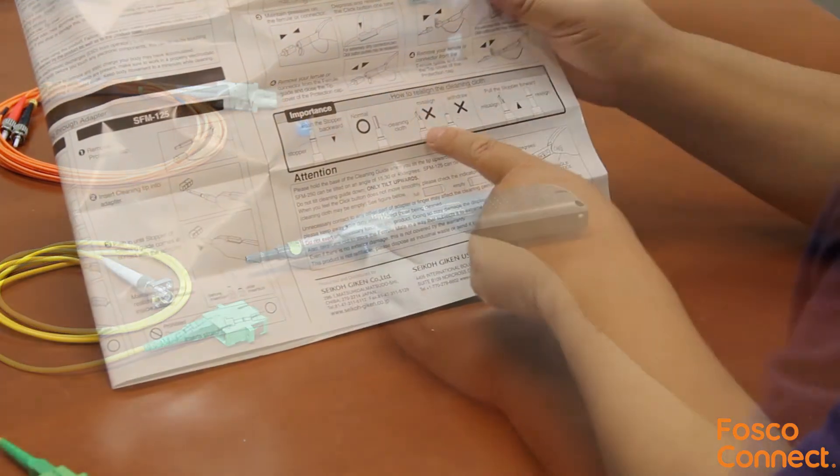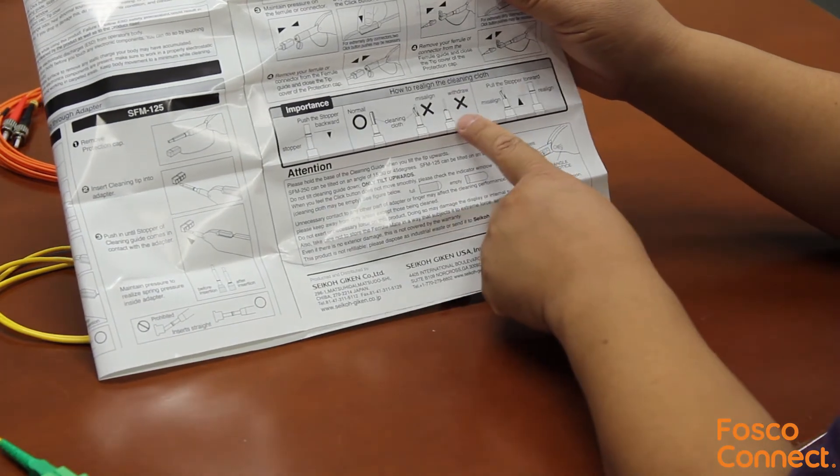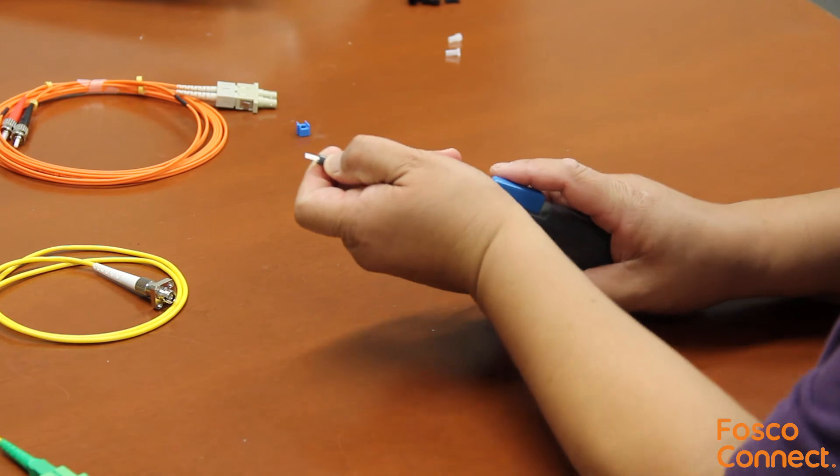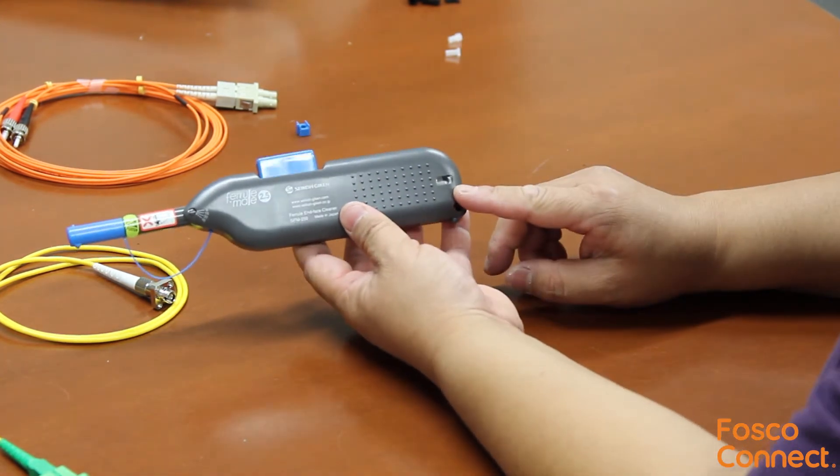If the white cleaning tape gets misaligned, such as shown in this picture, we just need to push the guide in and then realign the tape manually. This is a universal dry cleaner